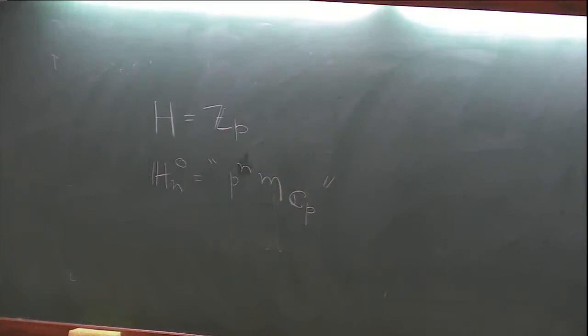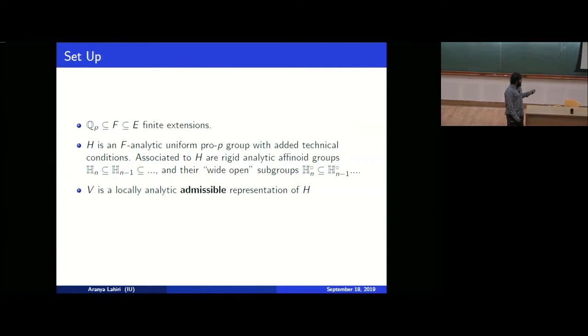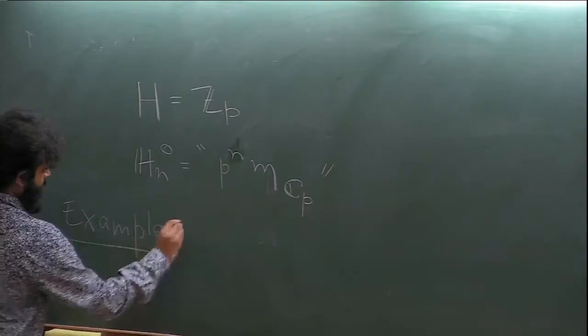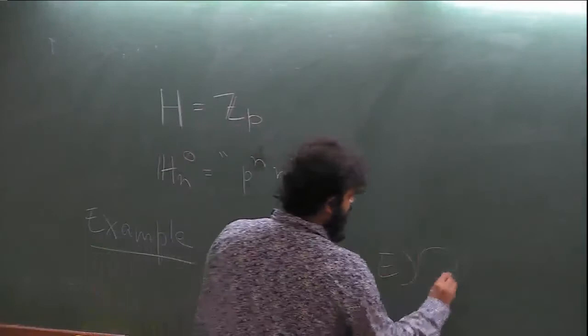The main objects of our discussion are locally analytic admissible representations of H. I will define admissibility at some point. As for locally analytic, the name is sort of self-explanatory: if you have a locally analytic representation, it means the action of the group can locally around each point be expressed as a power series with coefficients in V. The simplest example is the locally analytic functions from Z_p to E — this is a locally analytic representation of Z_p where the action is just by translation.